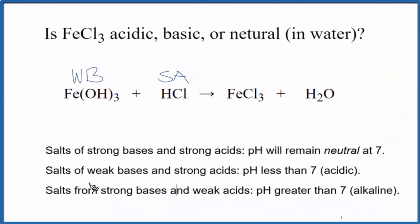Now we can use our rules to figure out whether FeCl₃ is acidic, basic, or neutral when it's dissolved in water. So we have a weak base and a strong acid. Here's a weak base, strong acid. So the pH is going to be less than 7. That means the solution will be acidic.